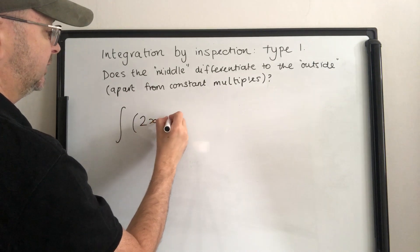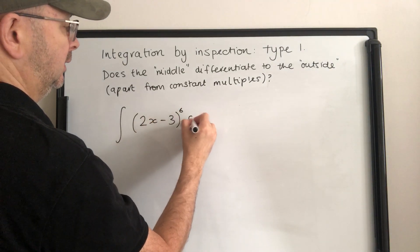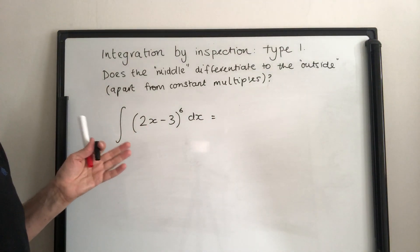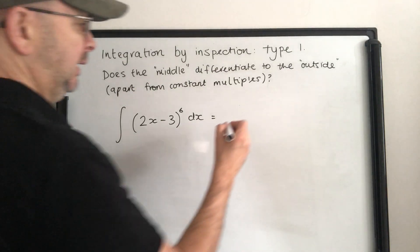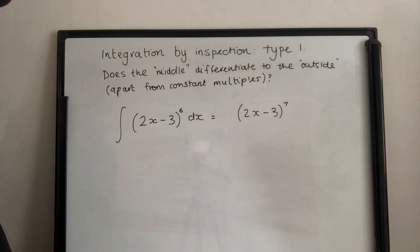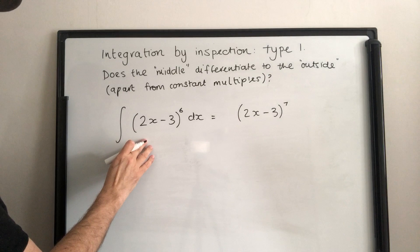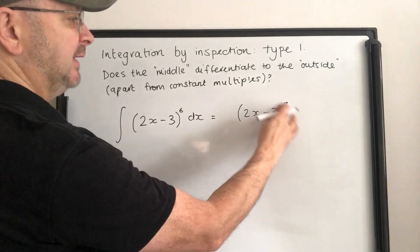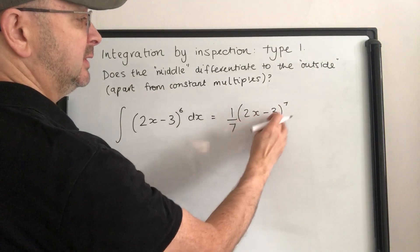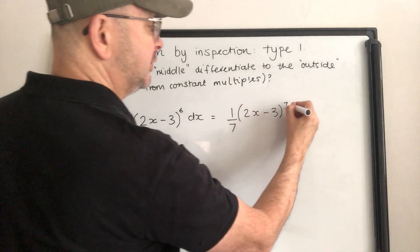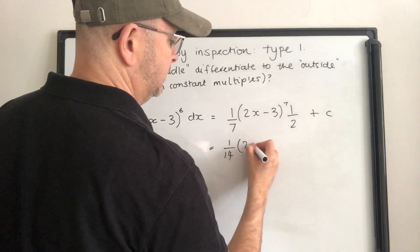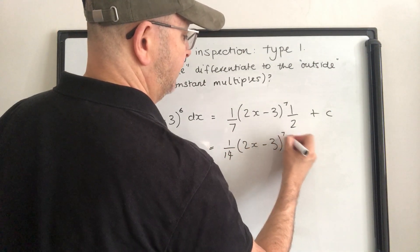Let's do another question — slightly easier. We have 2x minus 3 to the power of 6. Does the middle differentiate to the outside? The middle differentiates to 2, which is a constant multiple — I can adjust for that. So it's going to be 2x minus 3 to the power of 7. The 7 comes down the front; we don't want it. That gives 2x minus 3 to the power of 6 multiplied by 2; we don't want the 2. So the answer is 1 over 14 times 2x minus 3 to the power of 7, plus c.